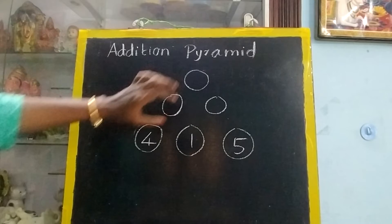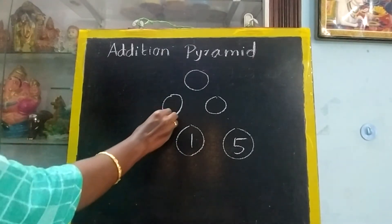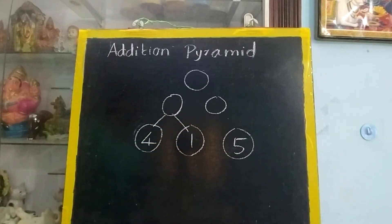See, now you are going to build. First thing you have to add these two circles which is nearby. 4 and 1. 4 plus 1, 5.